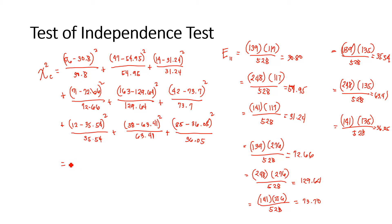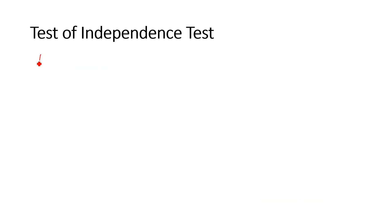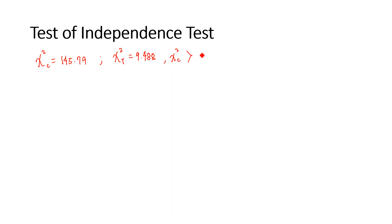The computed chi-square value is equal to 145.79. Our computed chi-square is 145.79 and our tabular chi-square is 9.488. Since the computed chi-square is greater than the tabular chi-square, we reject the null hypothesis.